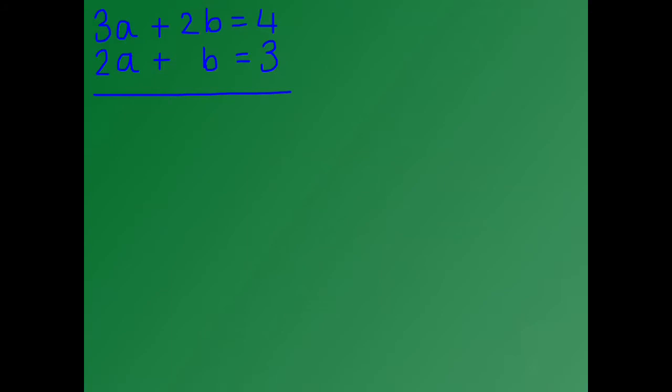The first thing we want to do with this question is label the equations so that they're easier to work with. At the top here we've got 3a plus 2b equals 4, and I'm going to label this equation number 1. Just underneath it we have 2a plus b equals 3, and I'm going to label this equation number 2.